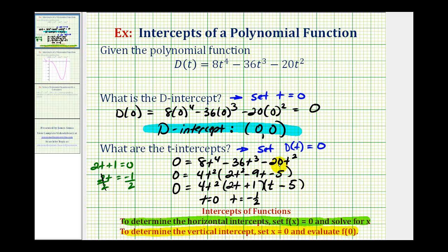And t - 5 = 0 when t = 5. So we have 3 t-intercepts: (0, 0), (-1/2, 0), and (5, 0).